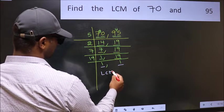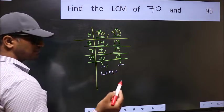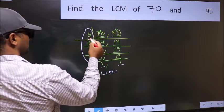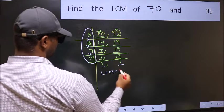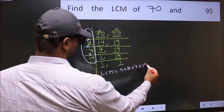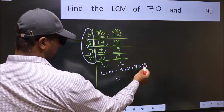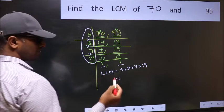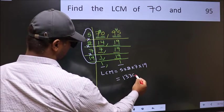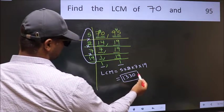So our LCM is the product of these numbers: 5 times 2 times 7 times 19. When we multiply these numbers, we get 1330 as our LCM.